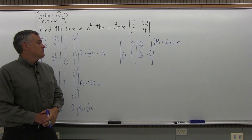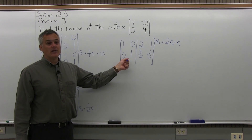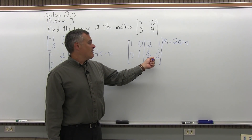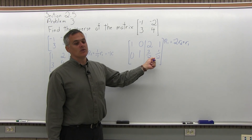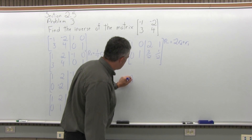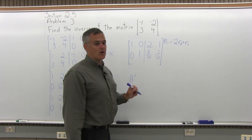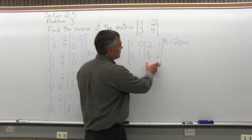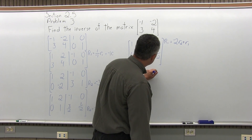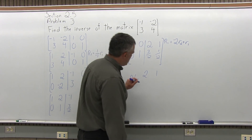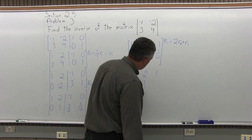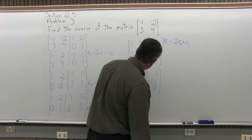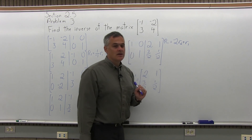The matrix on the left half has become an identity matrix, and the matrix on the right half is the inverse. So A inverse — written as A to the negative 1 — equals the matrix with top row 2, 1 and bottom row 3 over negative 2, 1 over negative 2. And we're done.